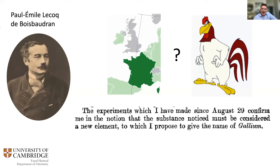His biographers were keen to point out that he took every opportunity to deny naming it after himself. He could always have named it francium — and nobody would have said he was naming it after himself. But he chose the Latinized form, so surely he must have seen the connection too. The name francium was later chosen by Marguerite Perey when she discovered this highly unstable last member of the alkali metals in 1939.